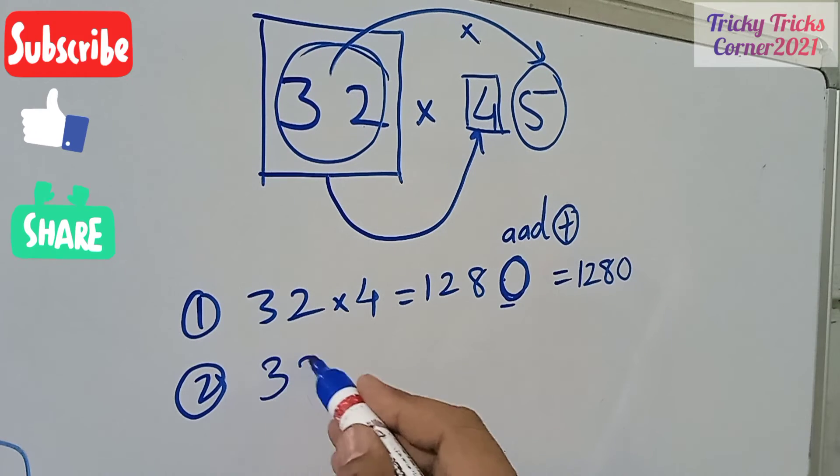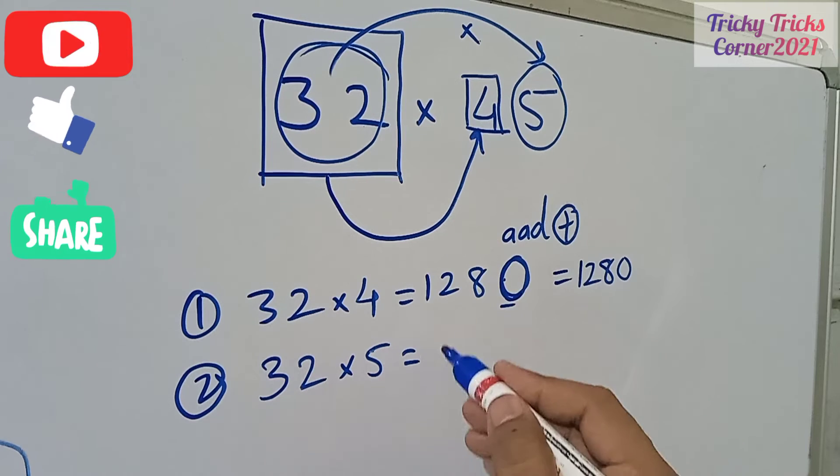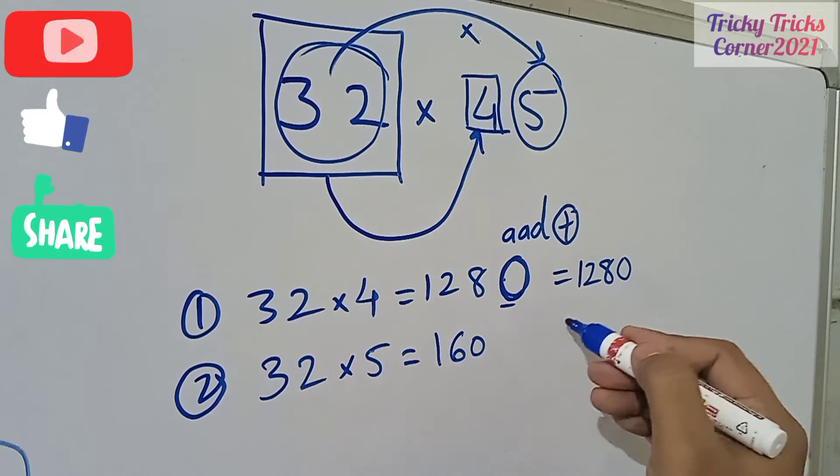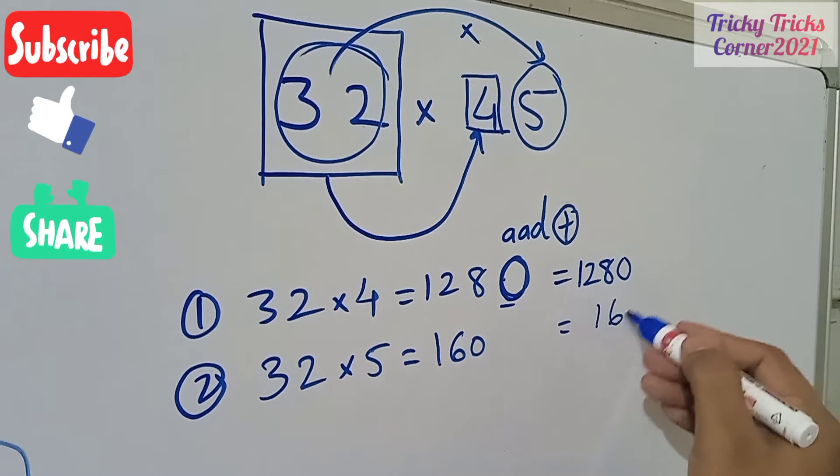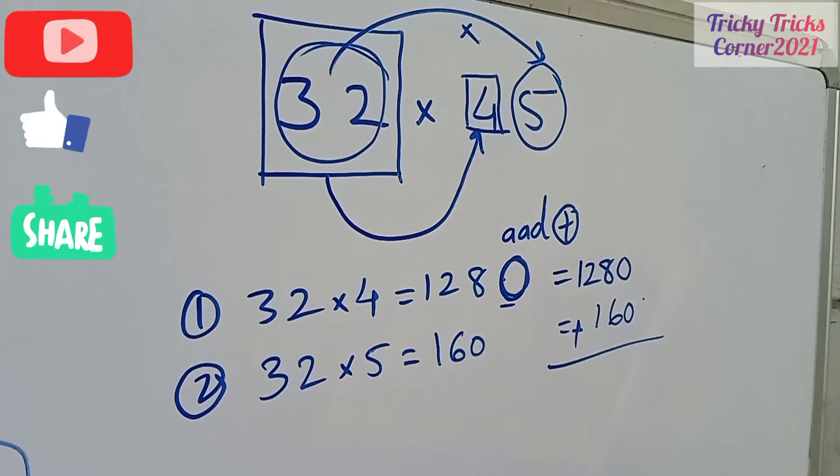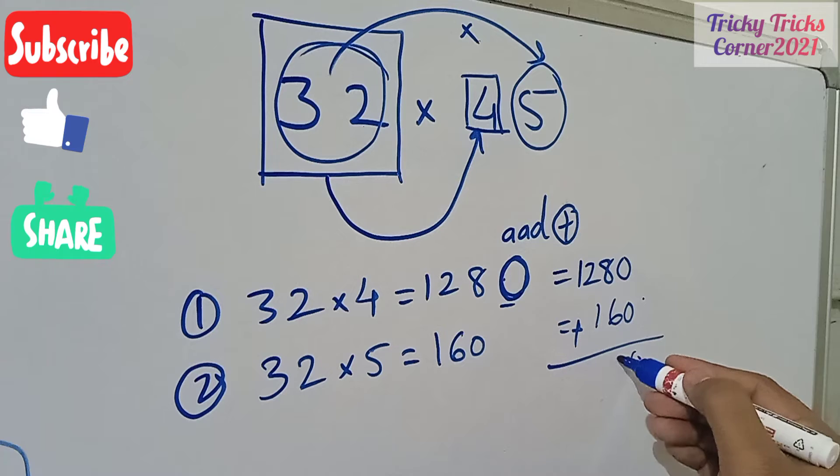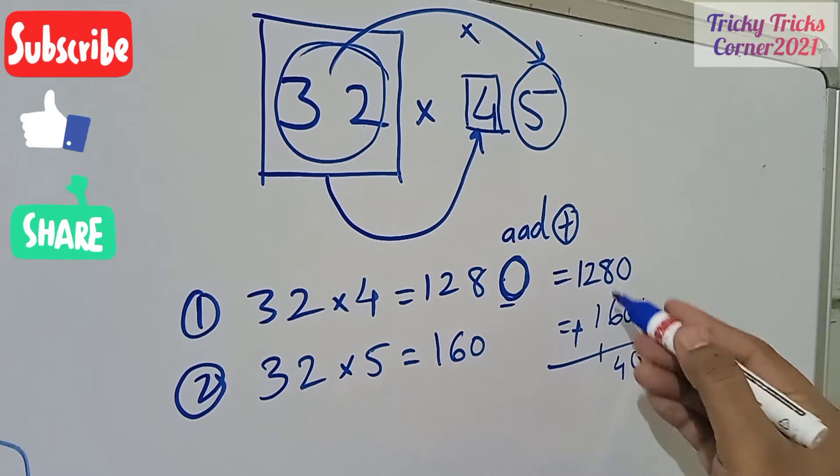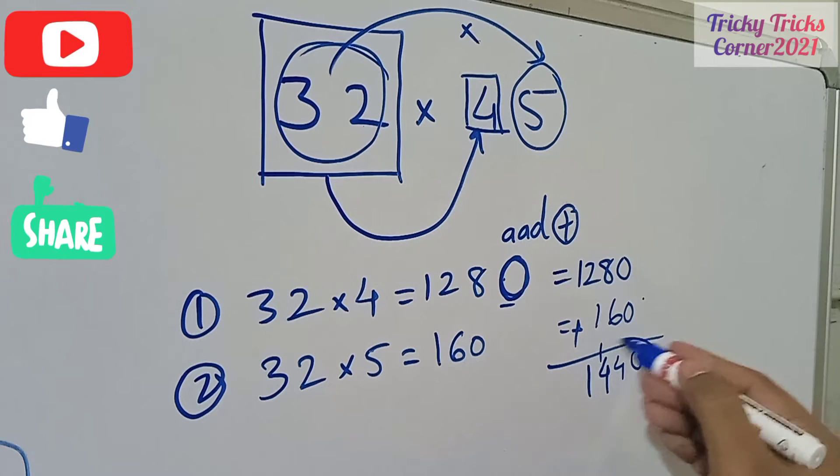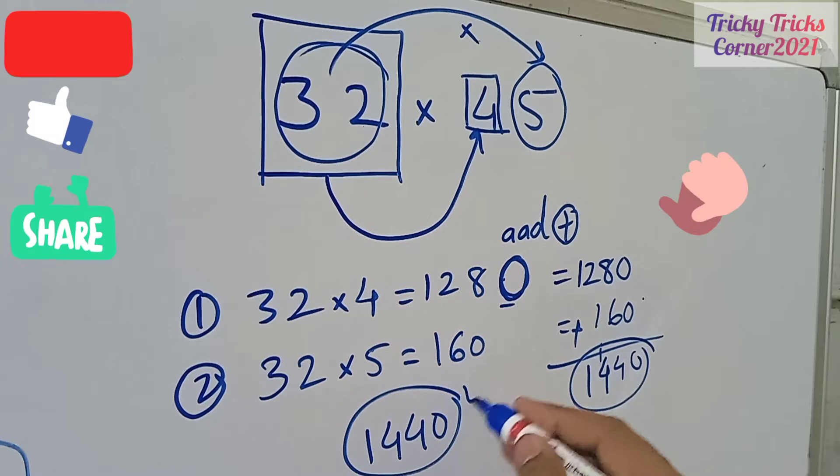Write down this number over here: 32 multiplied by 5, it will give you 160. 160 is the final answer. Write down over here, have this number as a plus. 0, 14 remaining is 1, 3 and 4. This 1440 is the answer.